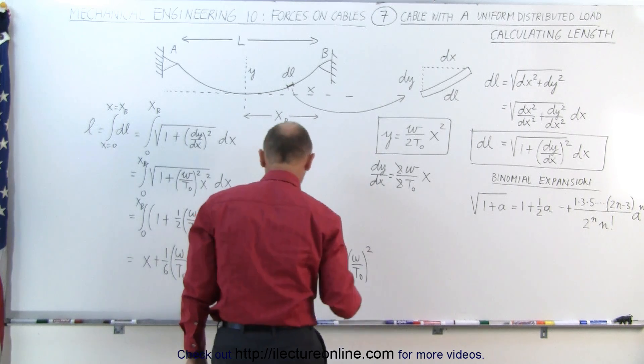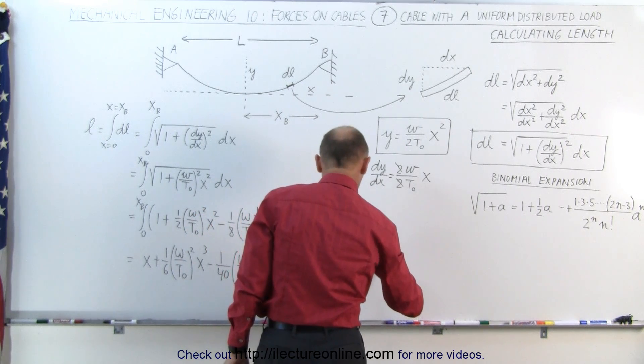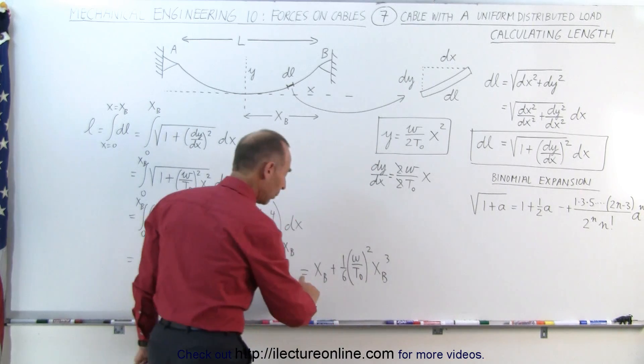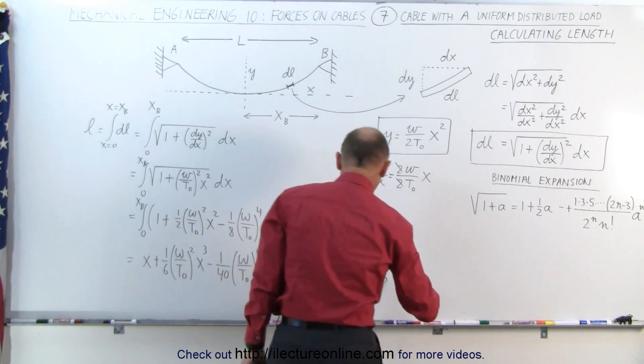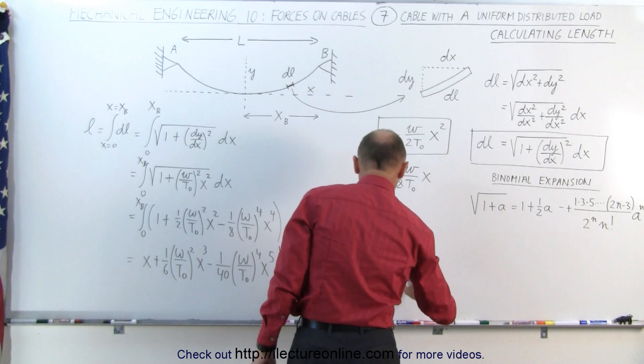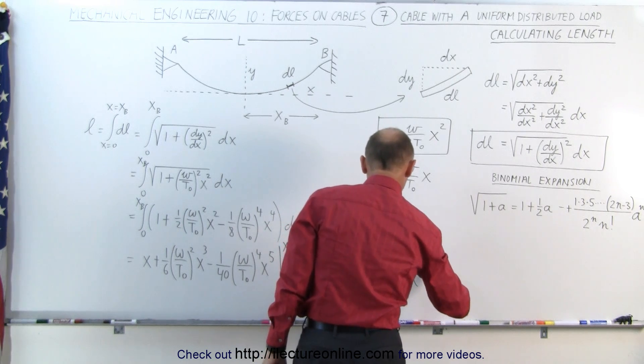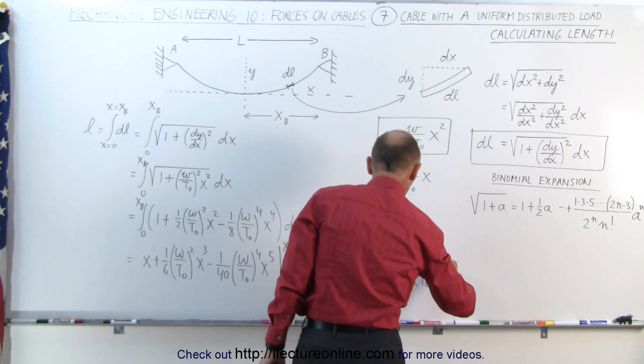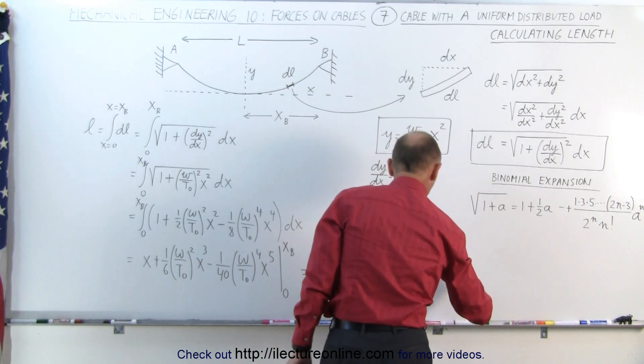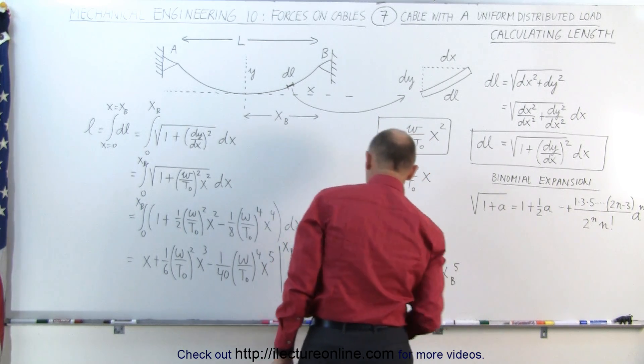So this becomes equal to X sub B plus 1/6 the quantity (omega/T sub naught) quantity squared times X sub B cubed. And typically that would be sufficient, but just add one more term, minus 1/40 times the quantity (omega/T sub naught) to the fourth power times X sub B to the fifth power.